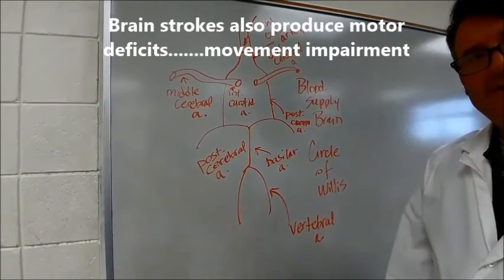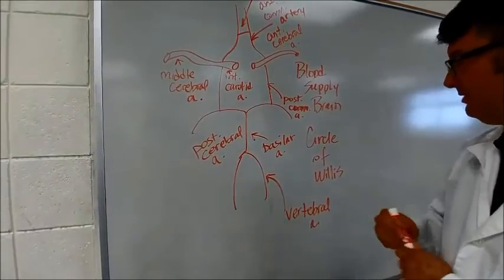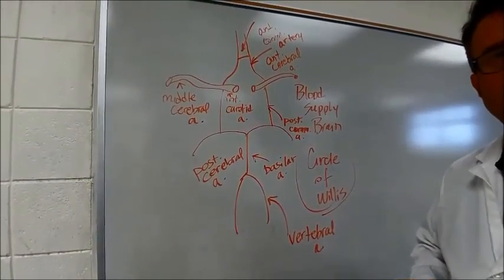So, I think that's good. I think that is a good basic layout of the Circle of Willis, the blood supply to the brain. Thank you.